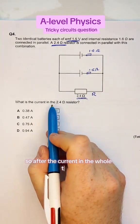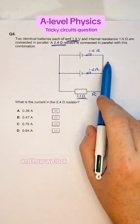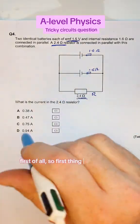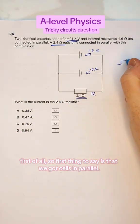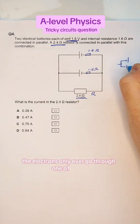After the current in the whole thing, let's take a look at how we resolve these two cells in parallel. The first thing to say is that we've got cells in parallel. The electrons only ever go through one of them.